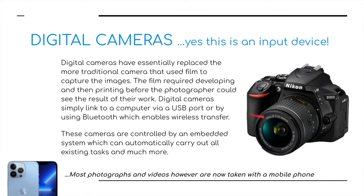Digital cameras simply link to a computer via a USB port or by Bluetooth, which enables wireless transfer. For example, if a journalist takes a photograph at an event that's happening in another part of the world, they can simply send that image across the internet to a newsroom or a newspaper, and it's instant.